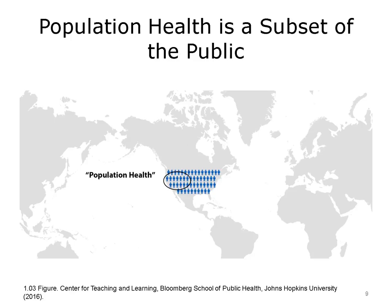Many of the approaches and interventions used within population health are borrowed from the public health field. Some people use the two terms synonymously, but that is not always correct. This has led to a controversy, in part because public health officers have been providing population health, albeit with limited resources, for many years. And increasingly, the term population health has been adopted by health care organizations and providers, such as large hospital systems, health maintenance organizations, accountable care organizations, and insurance companies. While these organizations apply approaches borrowed from their public health colleagues, they apply them, along with medical care delivery, to only a subset of the population.